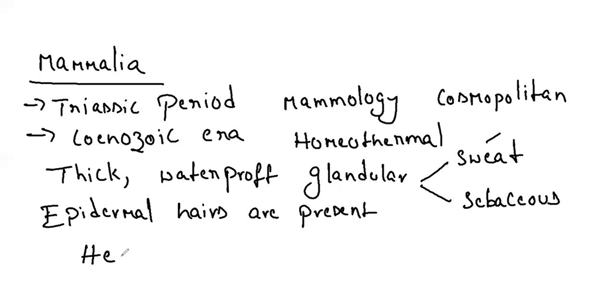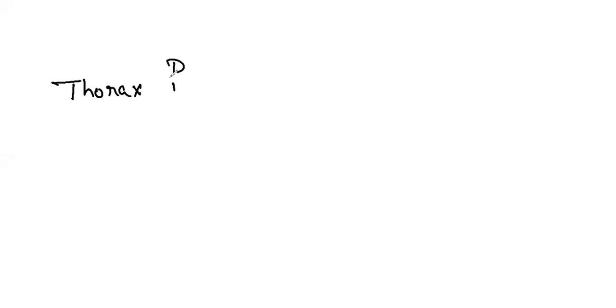The body is divided into head, neck, trunk, and tail. A horizontal diaphragm is present in the body cavity of all members — it is present between thorax and abdomen. The diaphragm helps in respiration, defecation, micturition, and parturition.